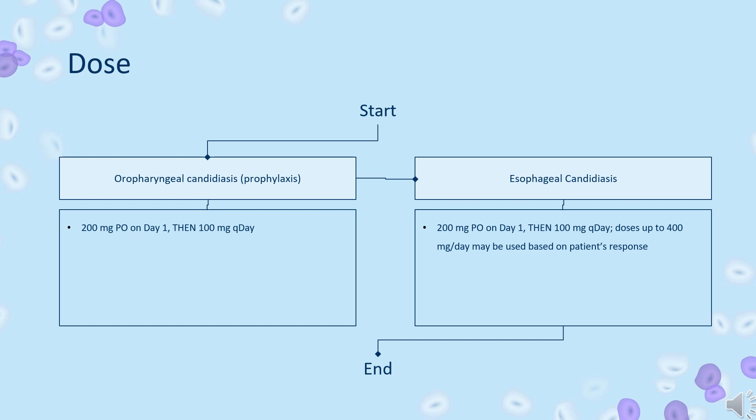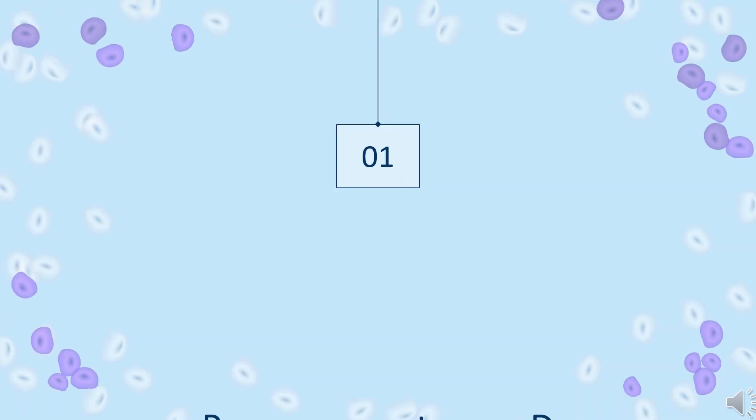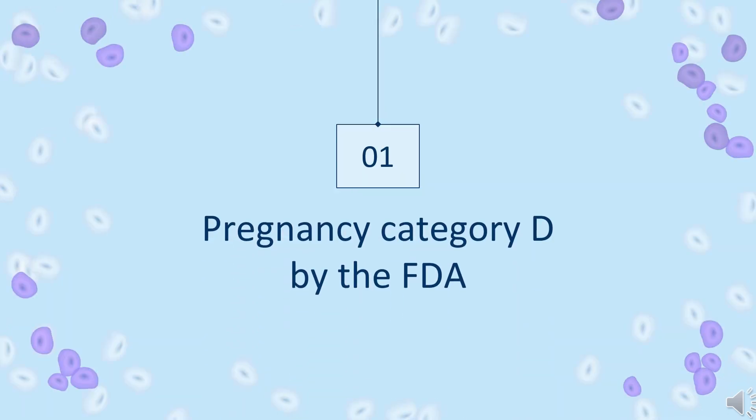Candida UTI/peritonitis: 50–200 mg PO once daily. Safety advice: U.S. FDA Pregnancy Category D. There is positive evidence of human fetal risk based on adverse reaction data from investigational or marketing experience or studies in humans, but potential benefits may warrant use of the drug in pregnant women despite potential risks.